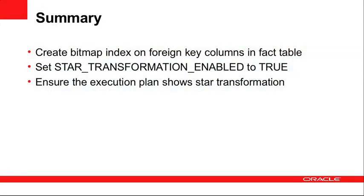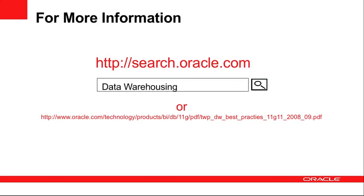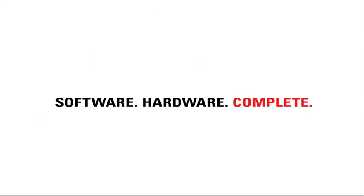In summary, when optimizing a star schema in an Oracle data warehouse: create a bitmap index on each of the foreign key columns in the fact table, set star_transformation_enabled to true in your init.ora environment, and ensure the execution plan shows that star transformation as we saw on the previous slide. For more information go to search.oracle.com with the keywords 'data warehousing', or consult the white paper accompanying this six-part series. Thank you for joining us. You've been listening to an Oracle screencast.